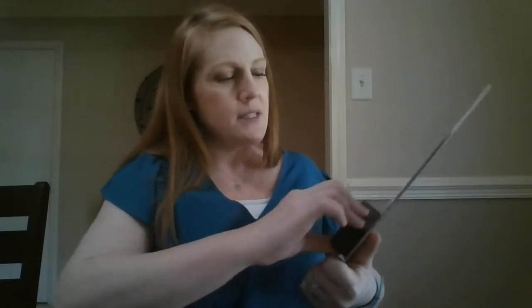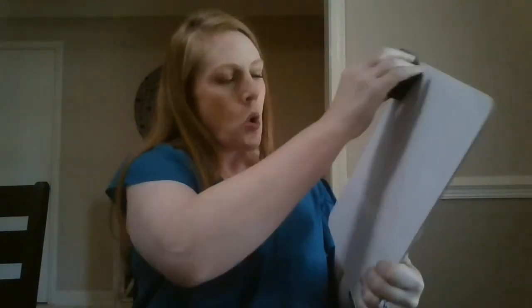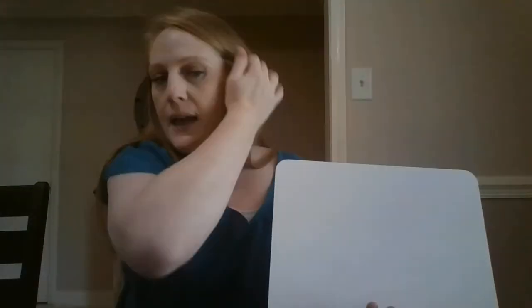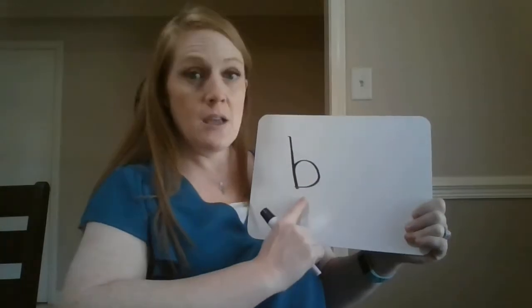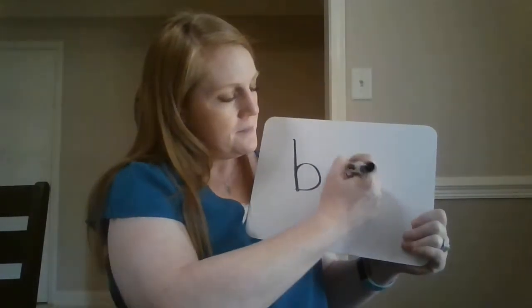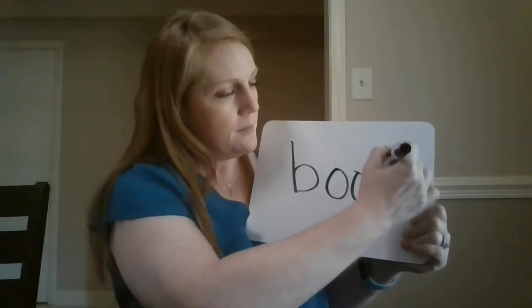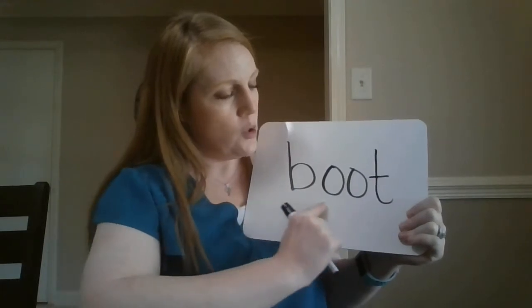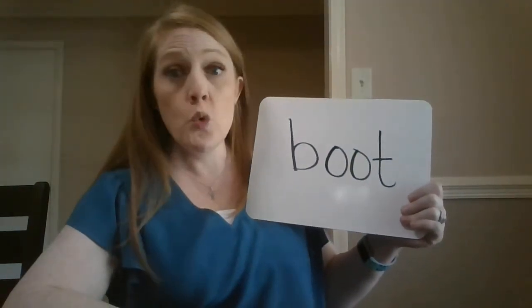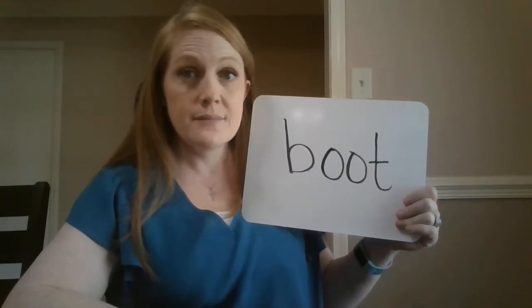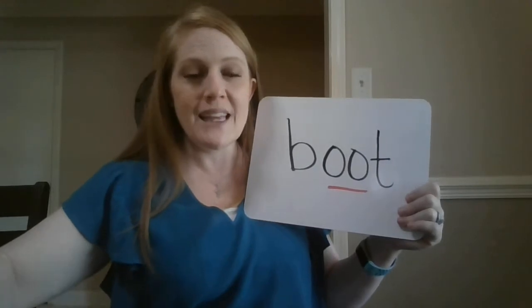Now I'm going to write some more words on the board. As I'm writing the letters, I want you to say the sounds. Then at the end, we're going to find the OO spelling in the word. So as I write, you say the sounds. B — b-OO-t. What is this word? Boot. What letters spell the OO sound in the word boot? OO spells OO in the word boot.